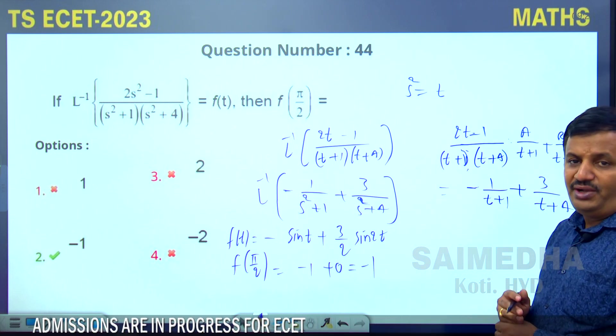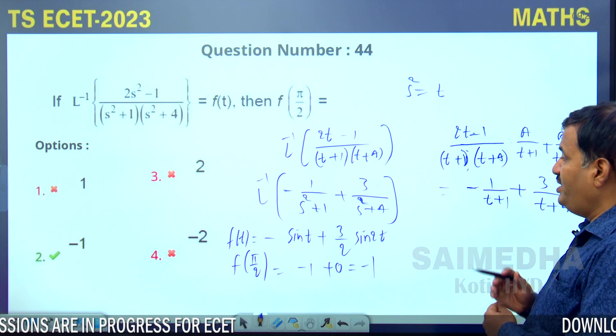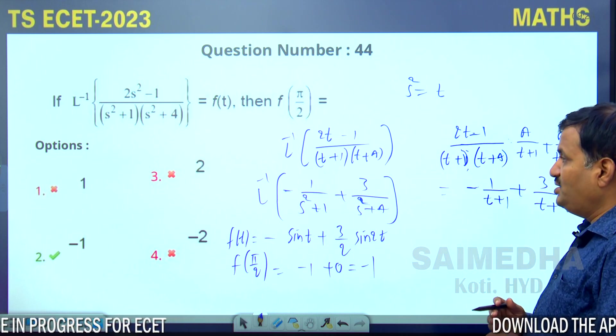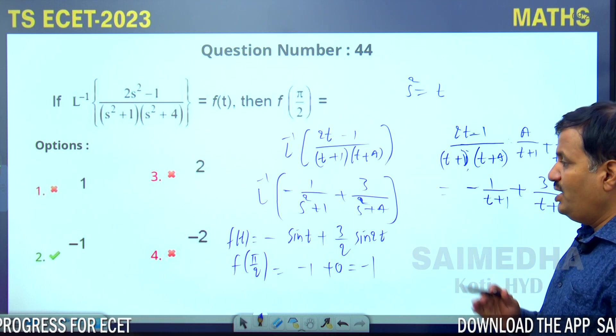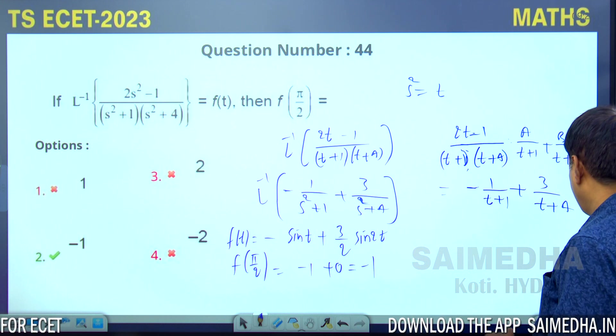This is a slightly tricky question. You can check using partial fractions and then substitute t = π/4.